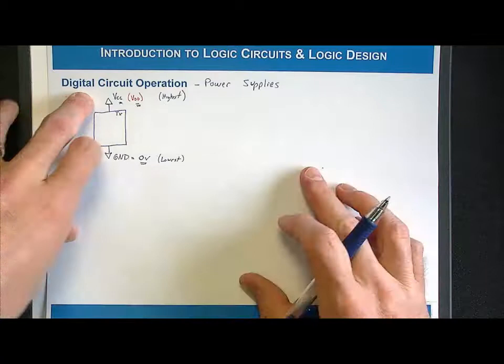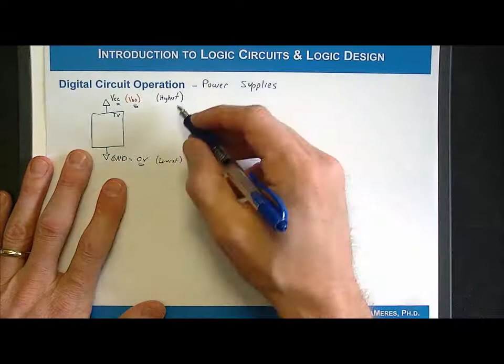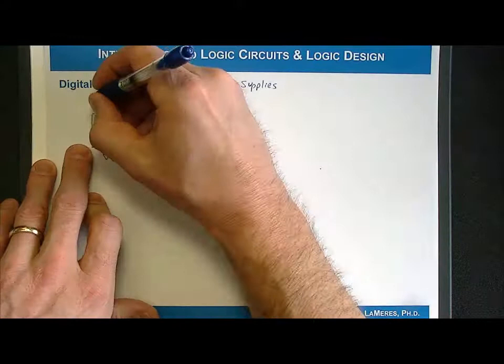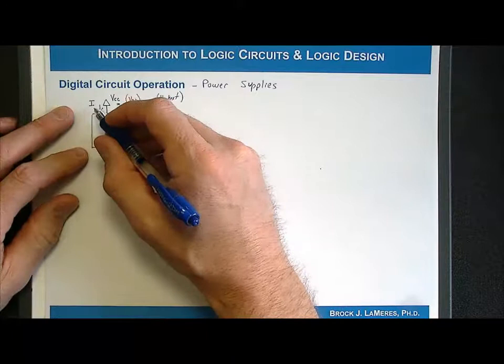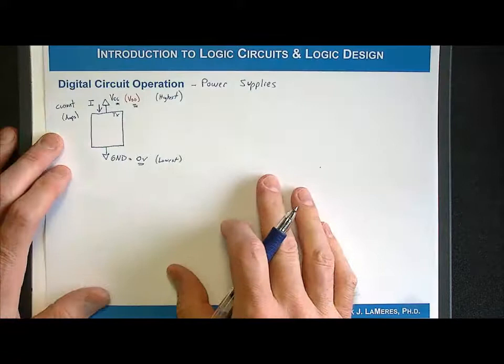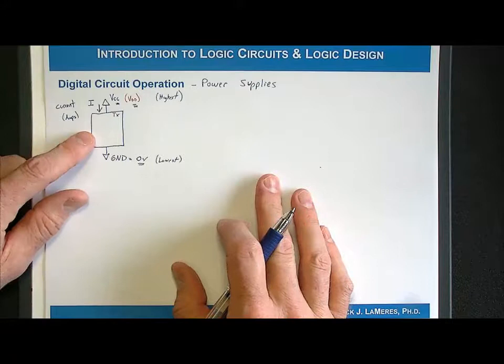The power supply serves a couple of purposes. Number one, it is the highest voltage in the system, and ground is the lowest. It also provides a certain amount of current necessary for the circuit to operate. Current is represented with the letter I, and it has a unit of amps. We're going to look at the way current flows into and out of a digital circuit and consider some of the design considerations we need to make.